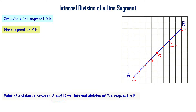Since the point of division is between A and B, this is called internal division of line segment AB. The point of division is lying between the two ends A and B of the line segment. This is the internal division of a line segment.